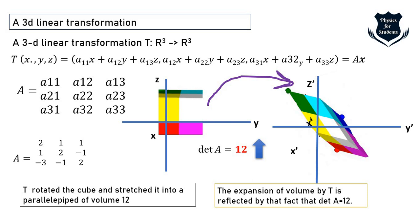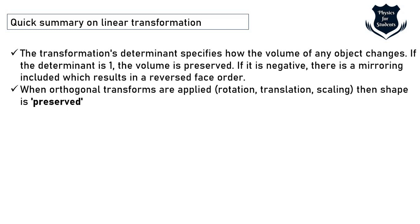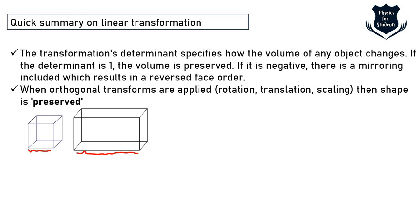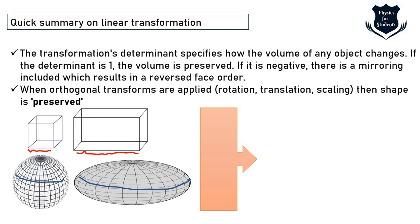Summary of linear transformations: the determinant specifies how volume changes. If determinant equals 1, volume is preserved; if negative, there is mirroring and orientation reverses; orthogonal transforms preserve shape. For example, a cube stretches to a cuboid (length increases), and a sphere extends to an oblate spheroid. The transformed volume is V₀ multiplied by |x|·|y|·|z|.